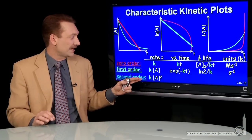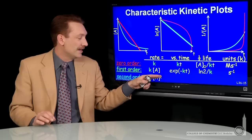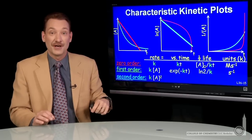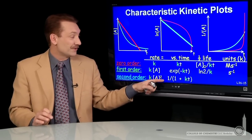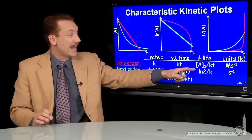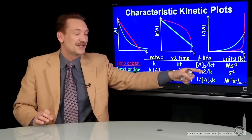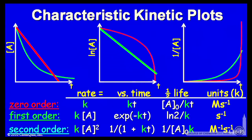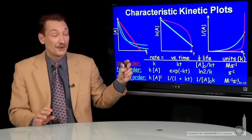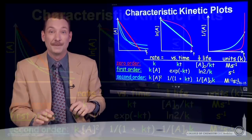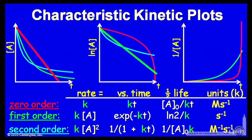For second order kinetics, the rate is proportional to the concentration of A squared, or a product of linear concentrations. The concentration versus time follows this expression, and the half-life is dependent on 1 over the initial concentration. The units of the rate constant are reciprocal molar, reciprocal seconds — 1 over molar, 1 over seconds. Looking at the three plots: concentration versus time for first and second order look very similar, so you can't easily determine whether it's first or second order from a concentration versus time plot. Natural log concentration versus time for a second order reaction is not linear, but 1 over concentration versus time is linear for a second order chemical reaction.